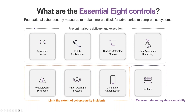These are the eight controls. The Australian Cybersecurity Centre actually publishes 37 different strategies and 900 controls — we're just focusing on eight, that Essential Eight. Application control, patching applications, disabling untrusted macros and user application handling — that top row is there to prevent malware delivery and execution.